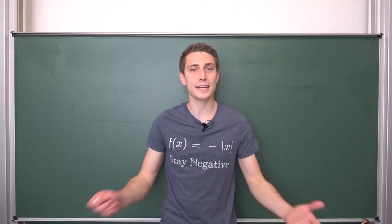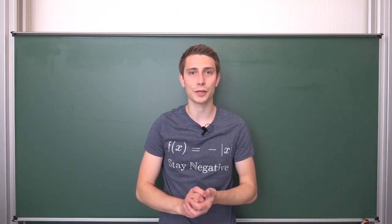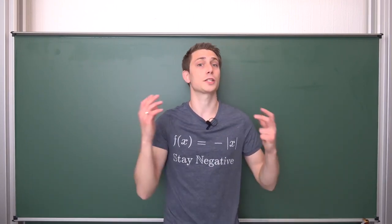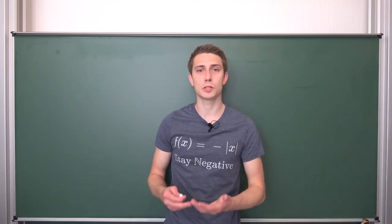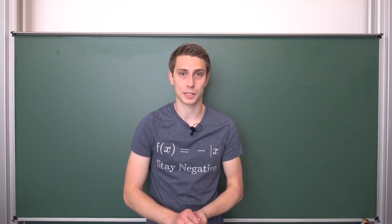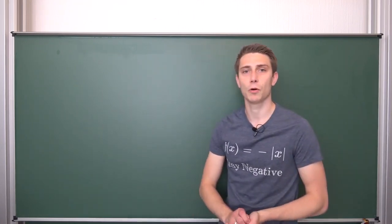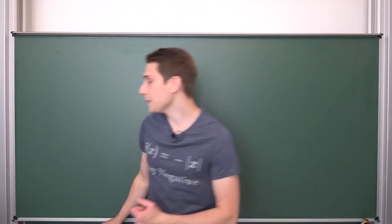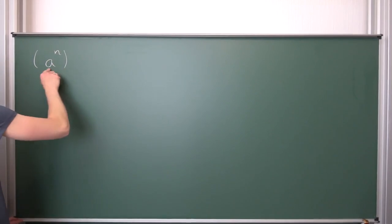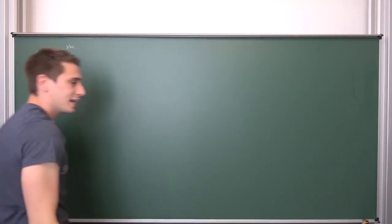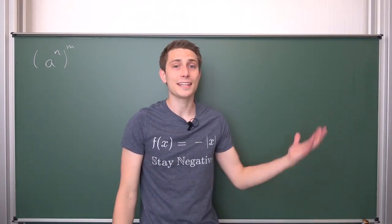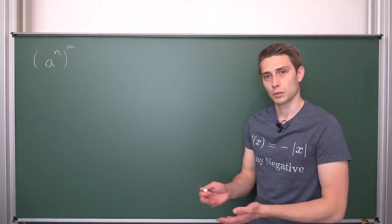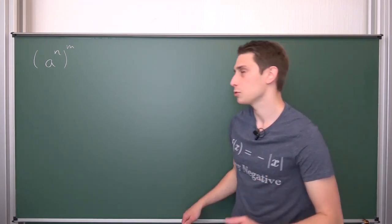Today we are going to talk about yet another rule of exponentiation, and for me it's the most important exponentiation rule there is. If you know about this rule, you know how to deal with fractions way better. Also, you are going to be able to solve square root equations. What we are going to do today is raise an exponential to a power — raise a to the nth power, an exponential, to the mth power. n and m could be anything: 0, 1, negative 1, 1/2, pi — anything. We are going to use examples to derive this rule.